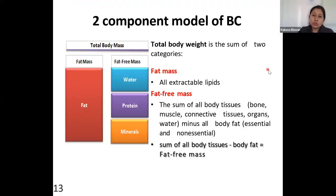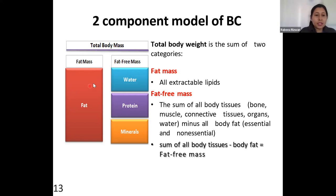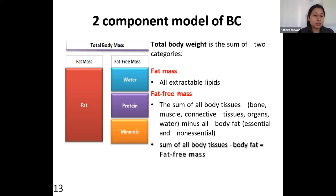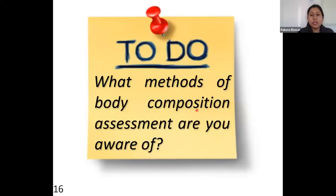You have covered the two-component model and how our body can be divided at a microscopic level, and how total body mass is calculated by adding fat mass — both essential and non-essential — and fat-free mass. Fat-free mass constitutes water, protein, and minerals. Proteins make up hair, nails, and muscles, while minerals include bone, and water is found in blood.